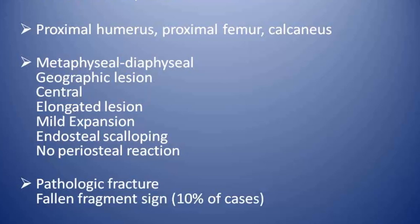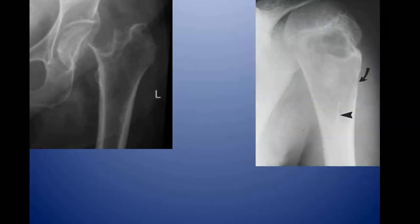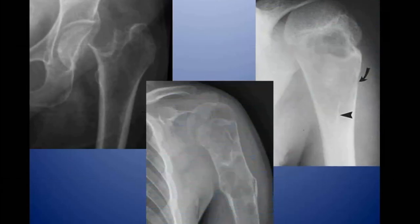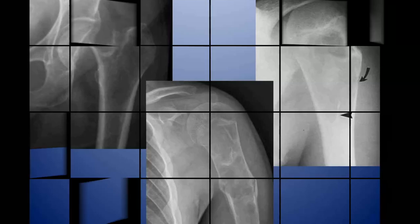Pathological fracture can be seen and can be the first clinical sign. The fallen fragment sign is seen in 10% of cases. This radiograph of the left hip joint shows a simple bone cyst with a complicated pathological fracture. Another radiograph of the proximal humerus shows a simple bone cyst with the fallen fragment sign. Differential diagnosis will also include fibrous dysplasia.